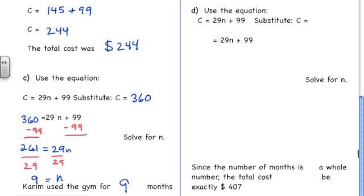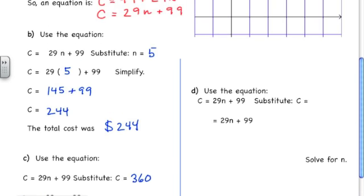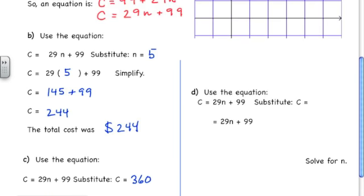There's one more question in this example. It's part D, and the question says, could Kareem possibly be charged $407 for his use of the gym? So again, we're going to use our equation, and this time the cost is $407. And we're asked, is that a possible charge that Kareem could have had to pay? So we replace the C with $407.